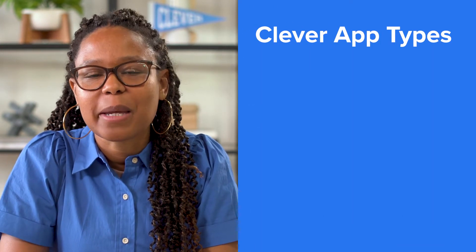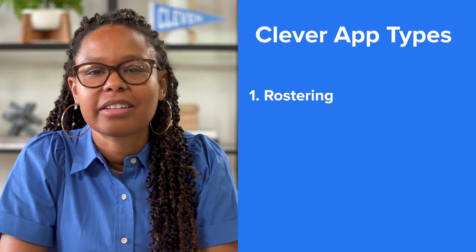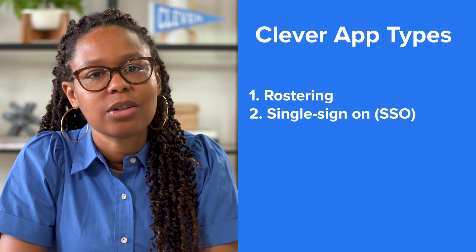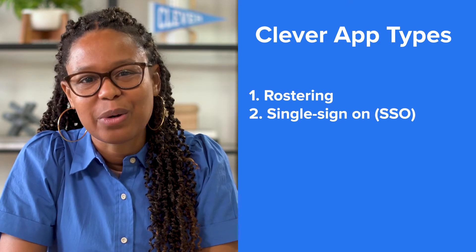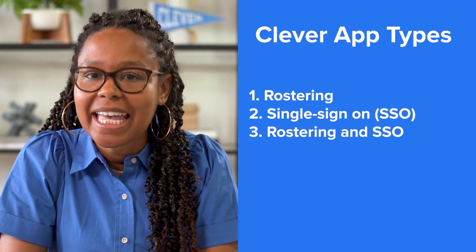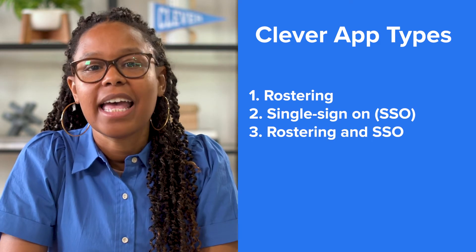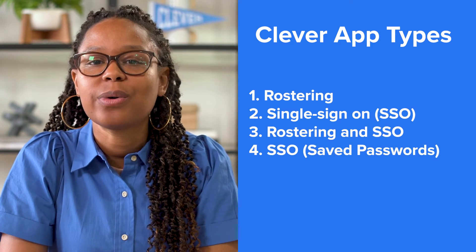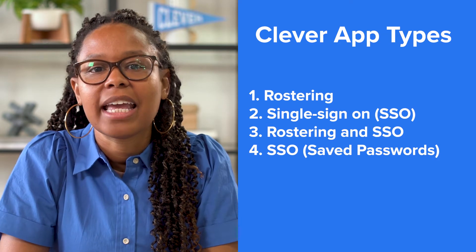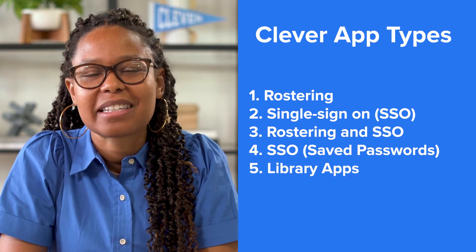The five app types are rostering, single sign-on or SSO, rostering and SSO, SSO saved passwords, and library apps.